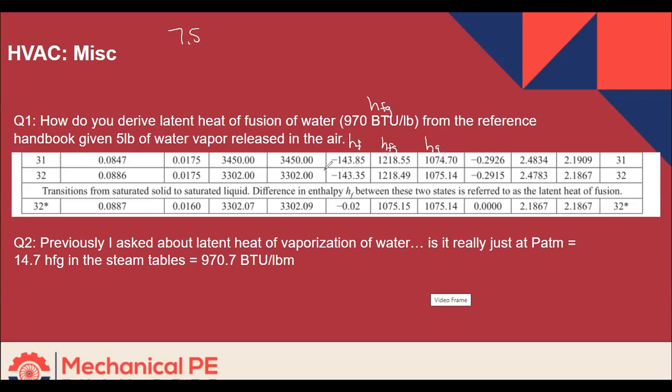And when you get down to 32 degrees in the table, you'll notice that for liquid water at 32, it's negative 143.35. And then it says transition from saturated solid to saturated liquid difference in enthalpy HF between these two states is referred to as the latent heat of fusion. So basically what's happening is this would be liquid water and this would be ice, right? Because it's colder as you go up. So it's the difference between the two.